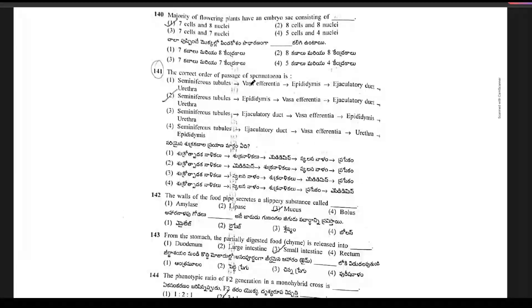Question 139: the majority of flowering plants have an embryo sac that consists of 7 cells and 8 nuclei.